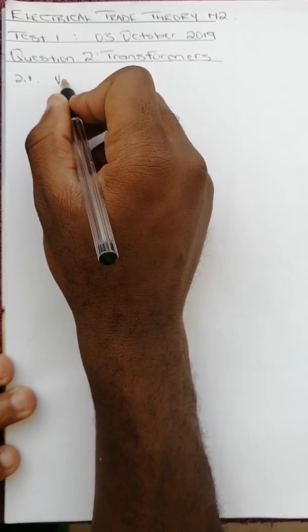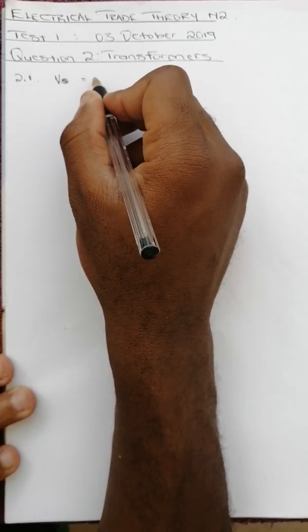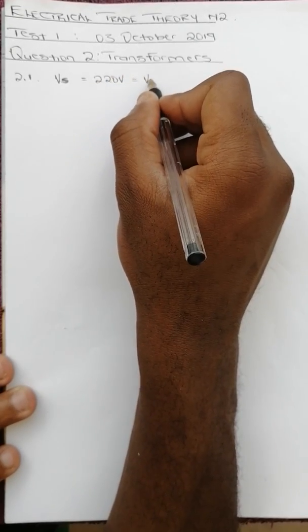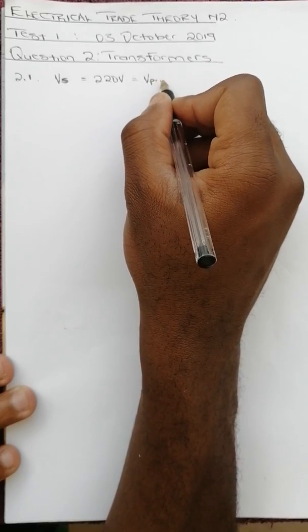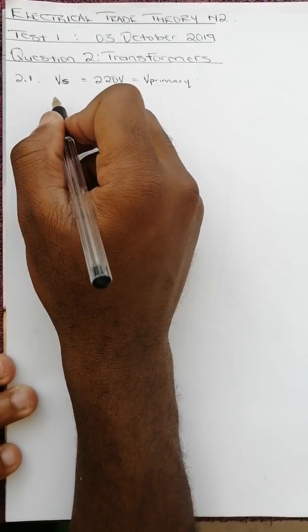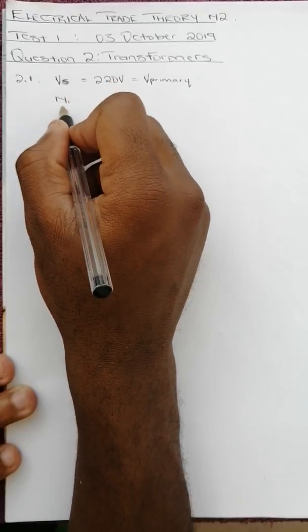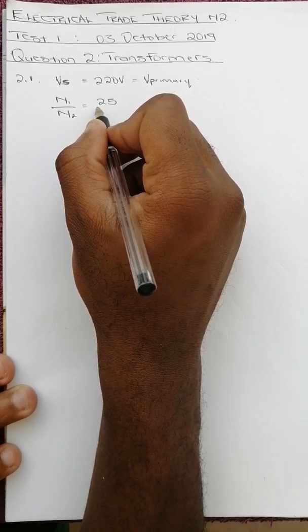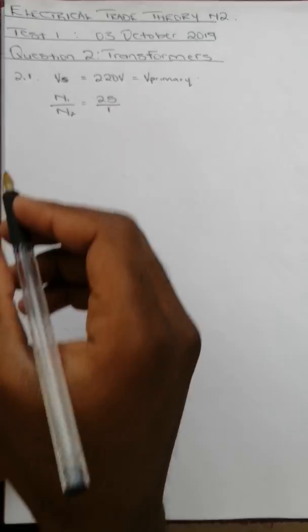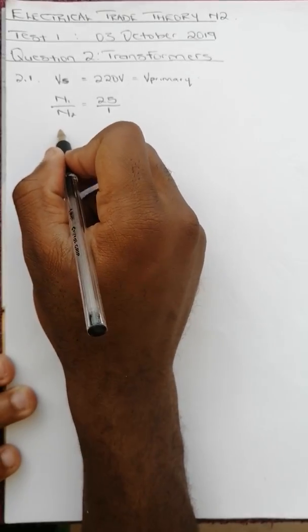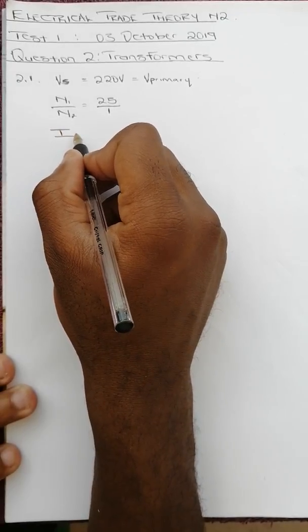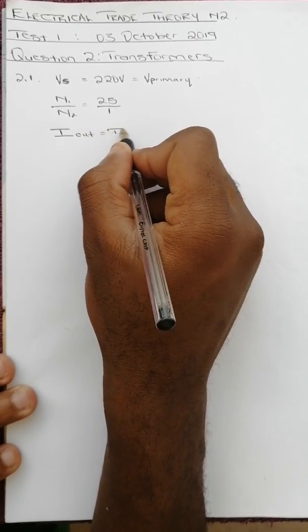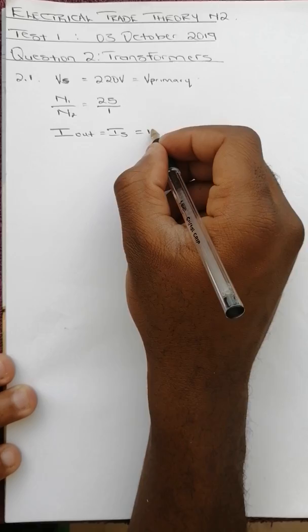V supply equals 220 volts, which equals V primary. N1 over N2 equals 25 over 1. And we are told that I out, which is the secondary current, equals 10 amps.